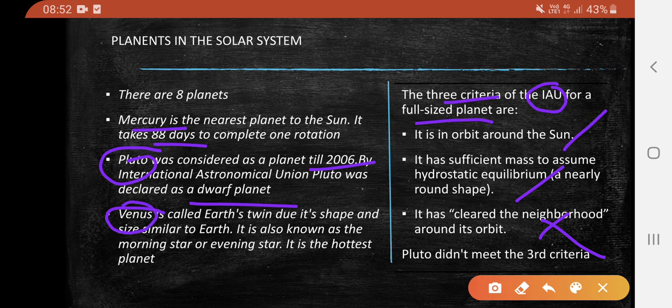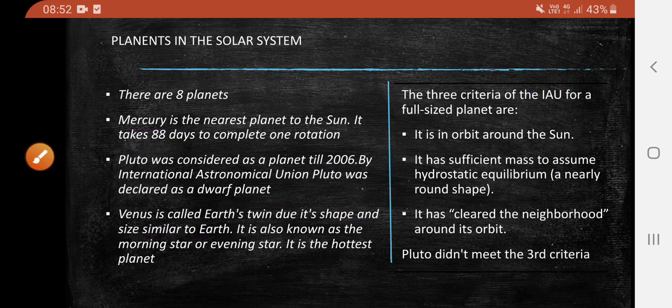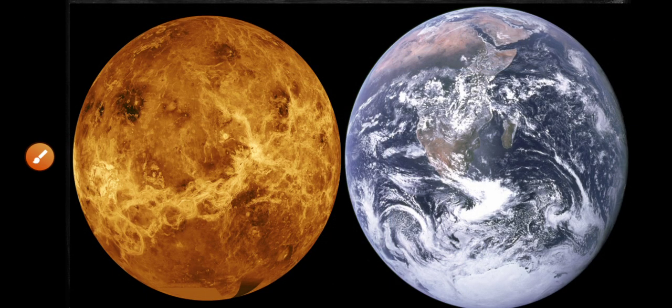Venus is called Earth's twin due to its shape and size being similar to Earth. It is also known as the morning star or evening star. It is the hottest planet. This is a comparison of Venus and Earth.